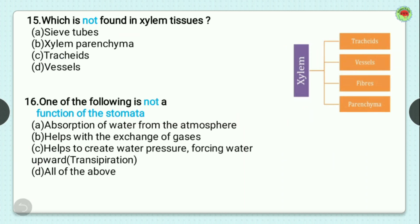Question number 15: which is not found in xylem tissue? The components of xylem are tracheids, vessels, fiber, and parenchyma. Sieve tube is present in phloem, not xylem. So option A, sieve tube, is the correct answer. Question 16: one of the following is not a function of stomata. The functions of stomata are exchange of gases and transpiration. Absorption of water from the atmosphere is not a function of stomata. So the correct option is option A.